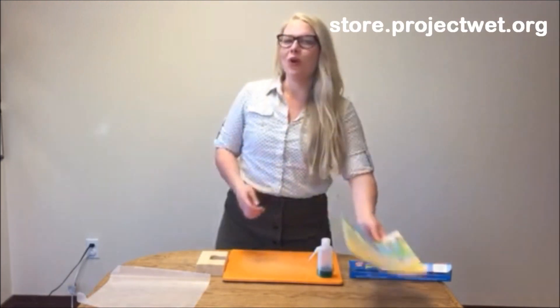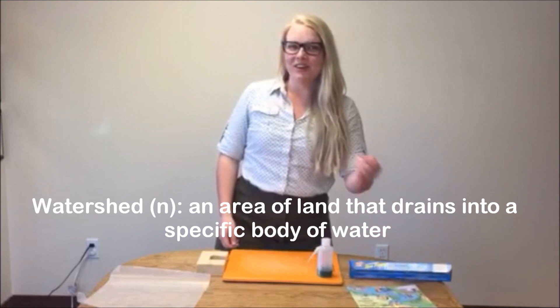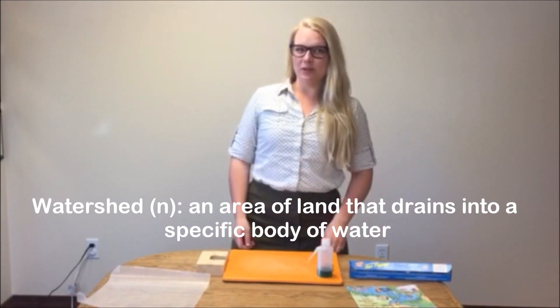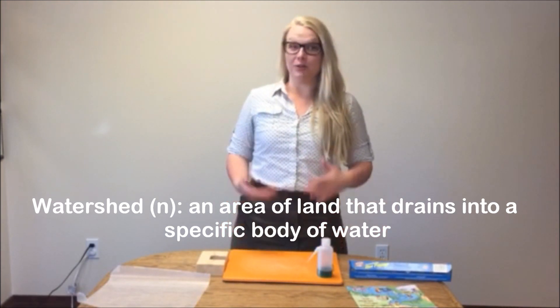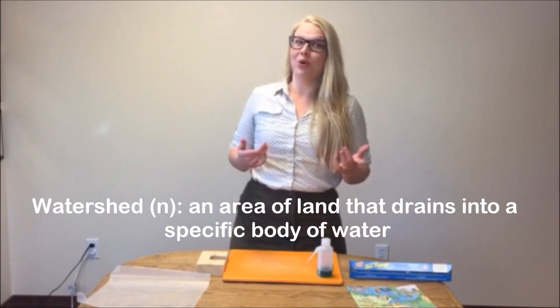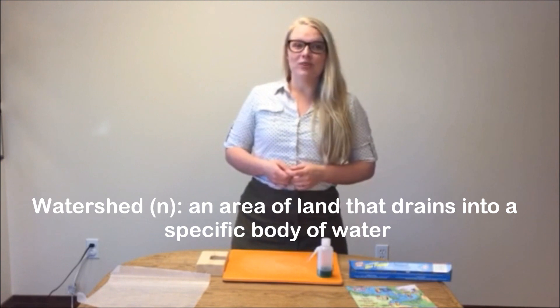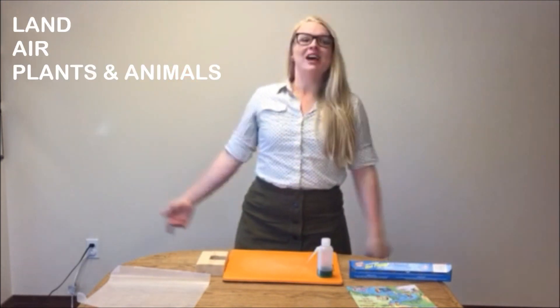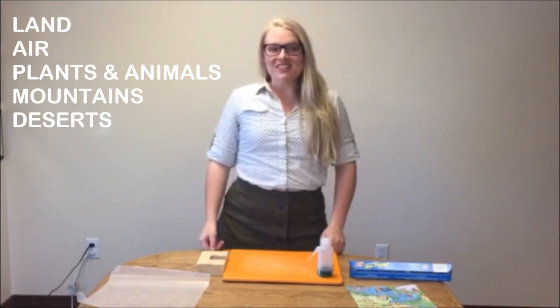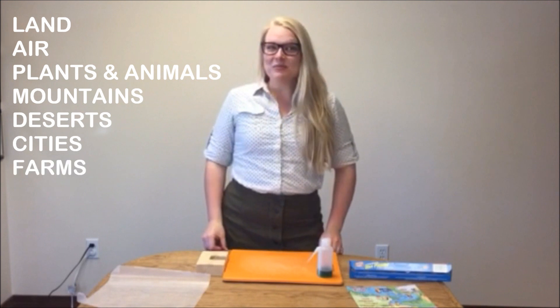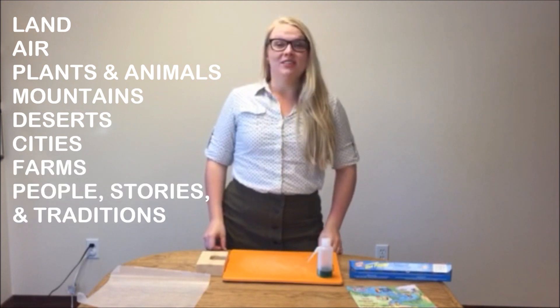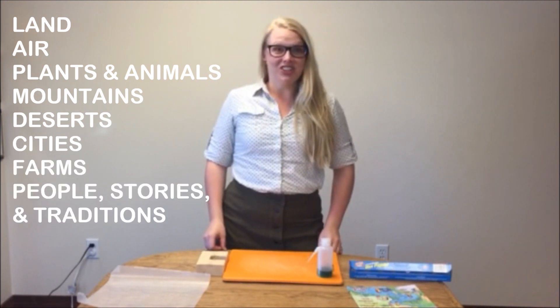A watershed is an area of land that drains into a specific body of water, like a river, stream, or a lake. It includes everything within its borders: all the land, air, plants and animals, mountains, deserts, cities and farms, even people and their stories and traditions.